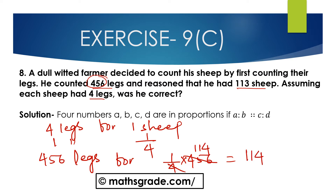So dividing 456 by 4, we get 114. So 114 is the answer. Was he correct?